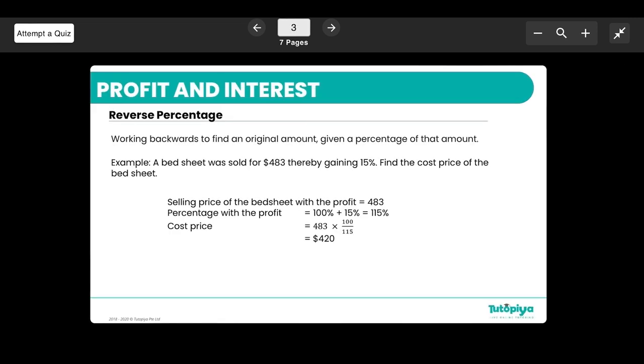Working backwards: this is reverse percentages. Basically, earlier we were trying to find the price after a particular discount or a sale or a loss. Here we're trying to work backwards, so if the sale price was this much or the gain price was this much, how much was the original? Let's have a look at an example.